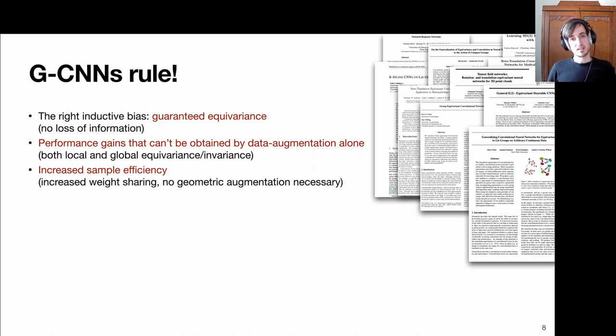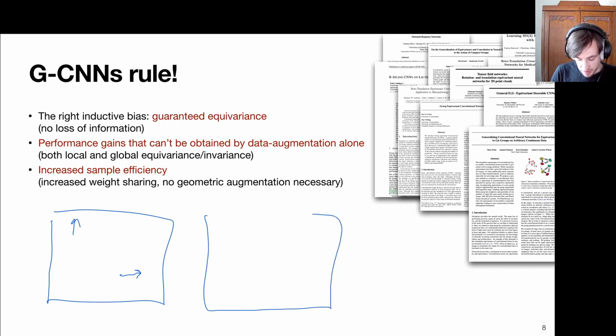With group convolutions, we can get performance gains that cannot be obtained with data augmentation alone. Importantly here is that with data augmentation, you have an image with some pattern which has some orientation. Data augmentation rotates this entire patch. You only are able to capture these global rotations or transformations. Whereas with group convolutions, you also automatically handle these local rotations.